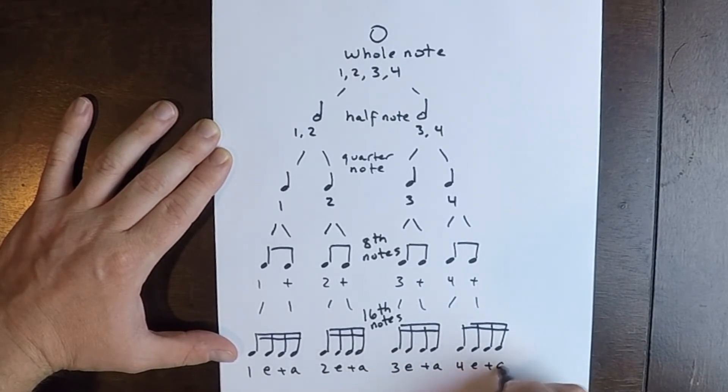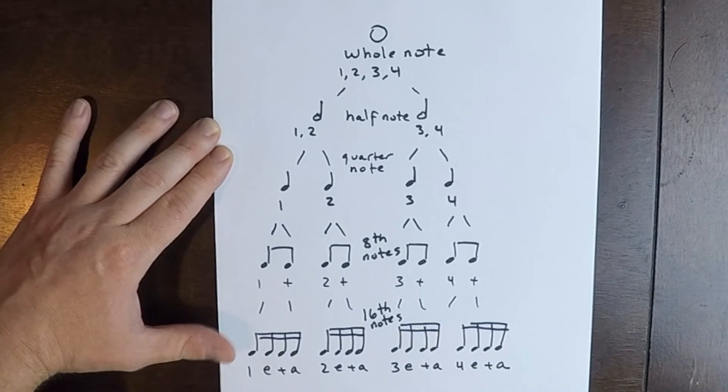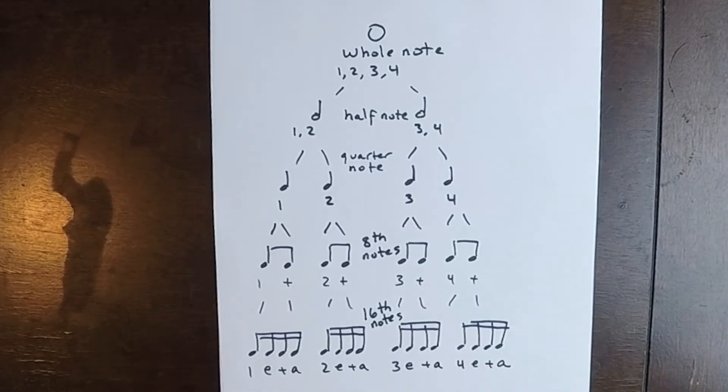Our whole note breaks down into two half notes, our half notes break down into quarter notes, our quarter notes break down into eighth notes, and our eighth notes break down into sixteenth notes. That is our rhythm tree. Thanks for checking this video out.